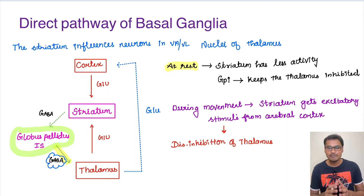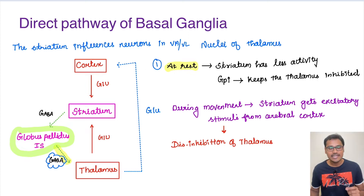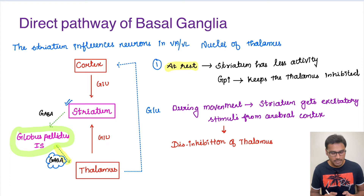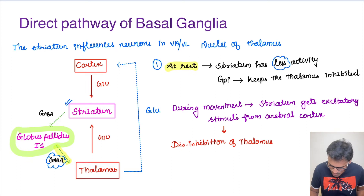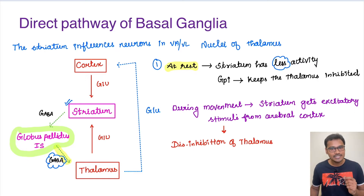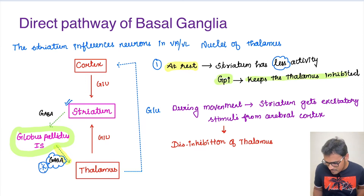Now let us understand what happens at rest and during movement. When the person is at rest, the striatum will have very minimal activity. The striatum usually produces GABA to inhibit the globus pallidus internus, but since striatal baseline activity is very low, the GPi is not inhibited. As a result, the globus pallidus internus is in turn going to inhibit the thalamus by producing GABA. So at rest, the GPi keeps the thalamus inhibited.